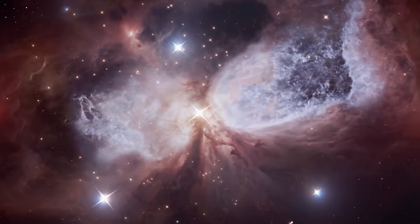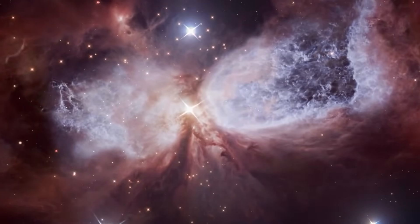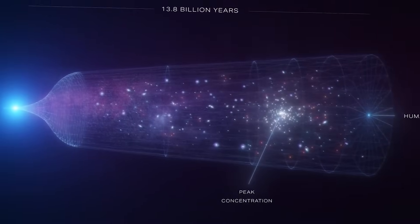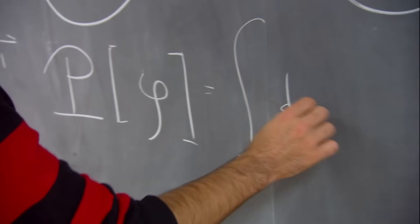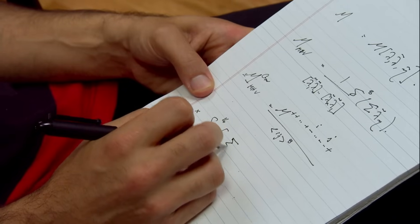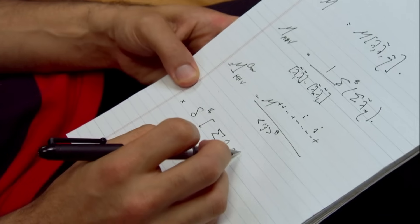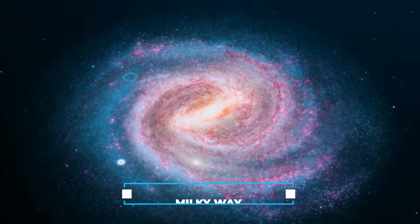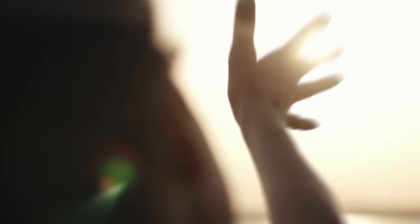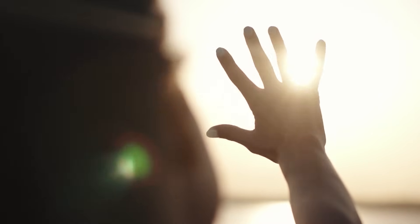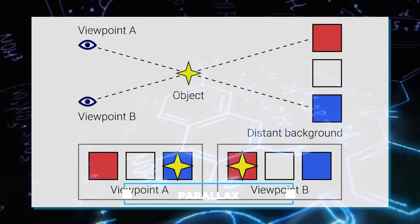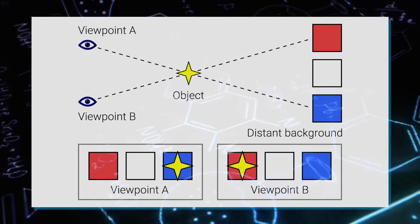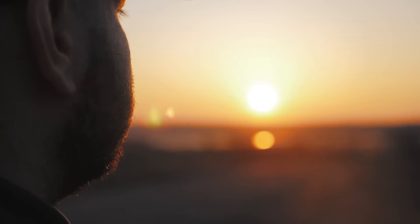So how do we actually measure the distances to these celestial objects? This is where the Distance Ladder comes into play, a series of observations and calculations that progressively measure distances to more remote objects. It all starts within our local universe, referring to objects in the Milky Way. Imagine holding your finger in front of your face and observing how it appears to shift when you close one eye and then the other. This optical phenomenon is called parallax and arises from the differing viewpoints of your two eyes.